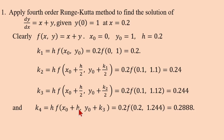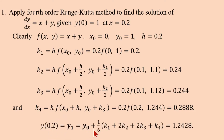For k4: x₀ + h = 0.2, y₀ + k3 = 1 + 0.244 = 1.244. So k4 = 0.2·(0.2 + 1.244) = 0.2888. After calculating k1, k2, k3, k4, substitute into the formula: y₁ = 1 + (1/6)·(0.2 + 2×0.24 + 2×0.244 + 0.2888) = 1.2428. So y(0.2) = 1.2428.